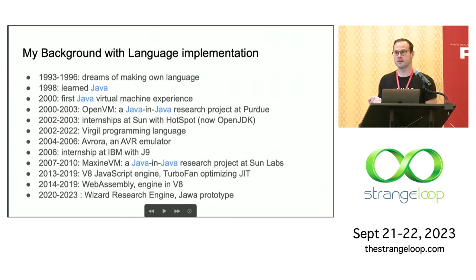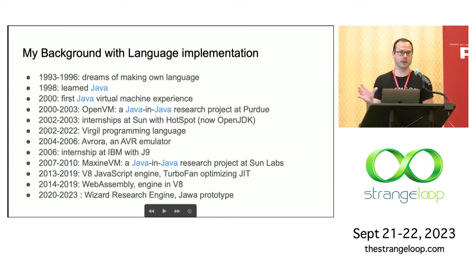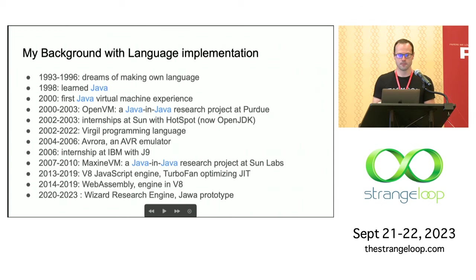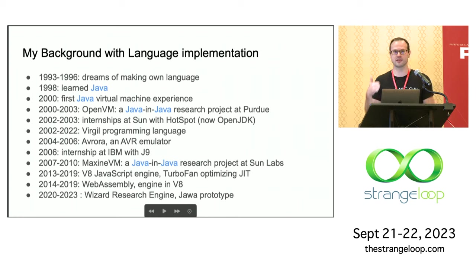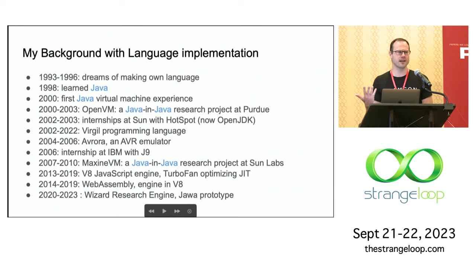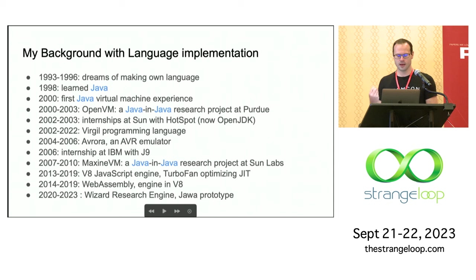I worked at Sun both as an intern and later as an employee after grad school. I worked a little bit with HotSpot. But then when I was in grad school, I did actually get a chance to design my own programming language, and I still work on it. In fact, Wizard, which I'm going to talk about today, is written in Virgil. Virgil is a language that's actually 20 years old. I wrote an AVR emulator — also kind of like a little VM — and there are some ideas from Avrora that I'm going to use in this talk too.